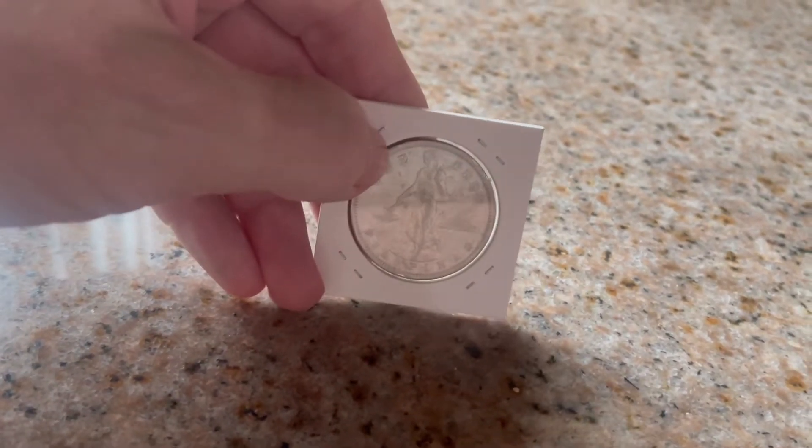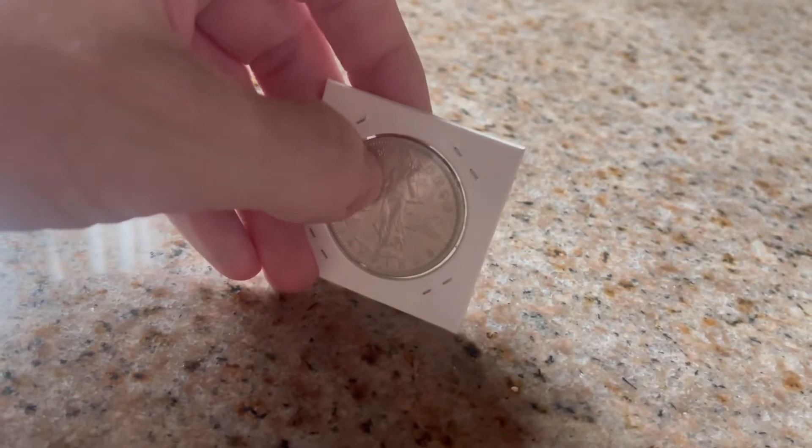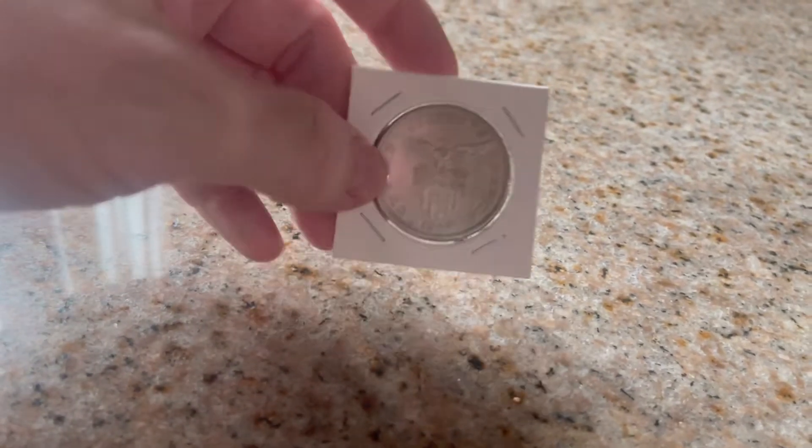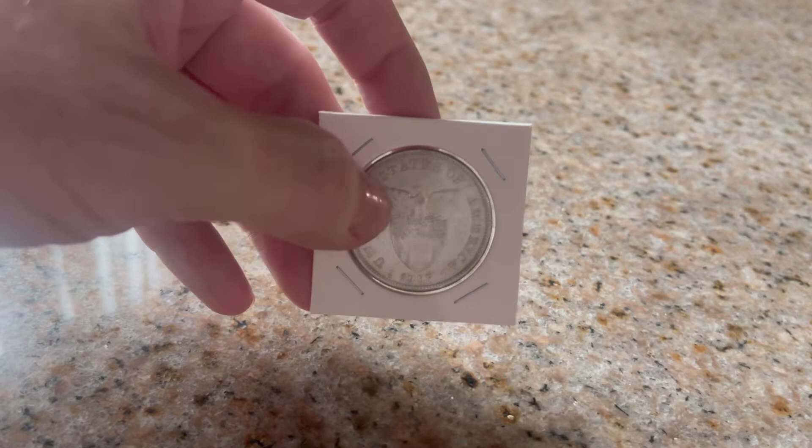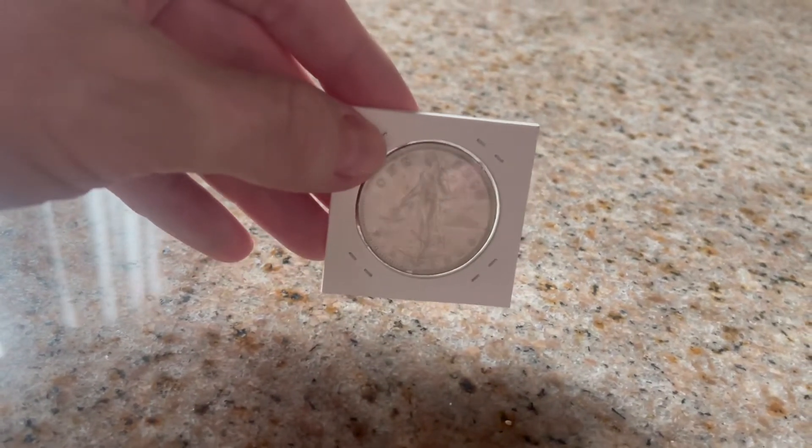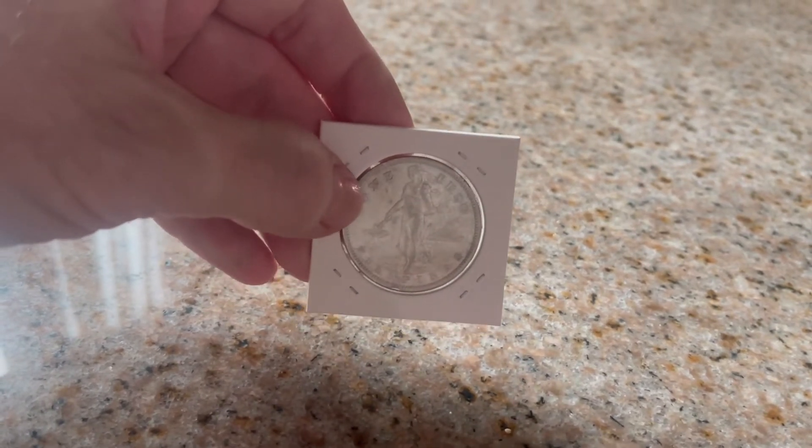But the value of the peso went down, so they had to change the size and the silver content. So this one is eighty percent silver and it's smaller than the Morgan and the Peace dollar. But the original was actually the same size and silver content as the Morgan dollar. It was made from the same blanks.